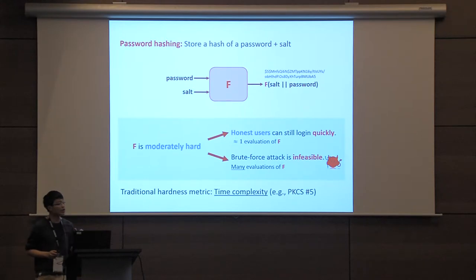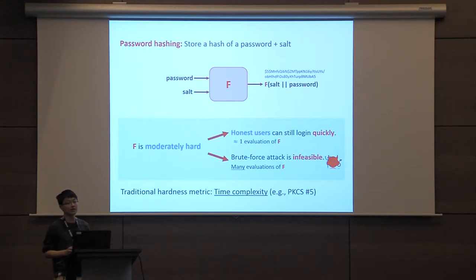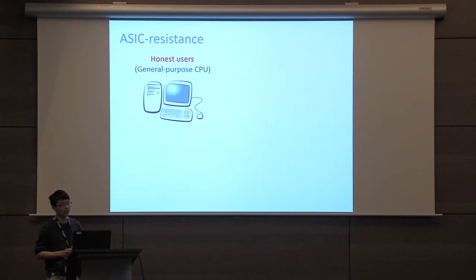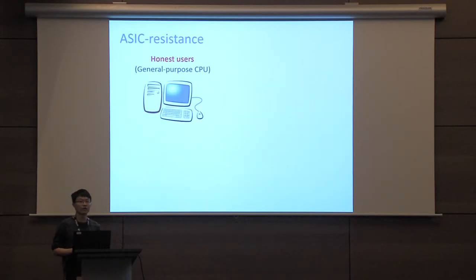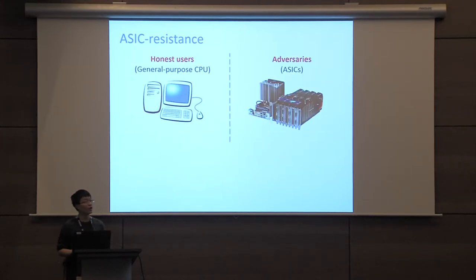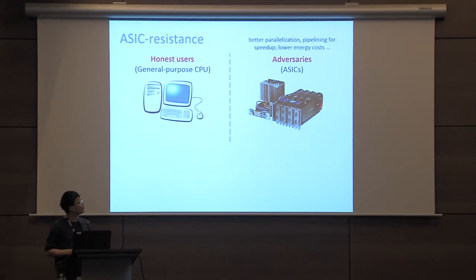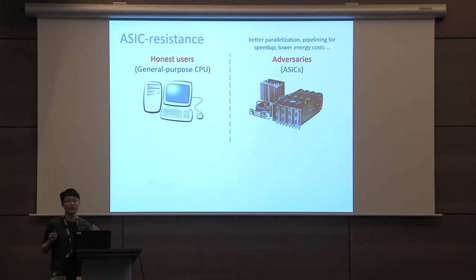This means it should be fast enough not to slow down honest users while authenticating, but slow enough to seriously impact the feasibility of brute force attacks. Traditionally, moderate hardness has been expressed in terms of time complexity, but this is by now understood not to be the best choice. Time complexity can vary a lot across different platforms.